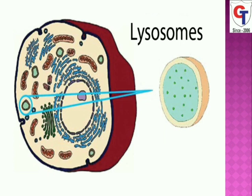Lysosomes are called the suicide bag because they contain hydrolytic enzymes. These hydrolytic enzymes help to digest a number of cell components.